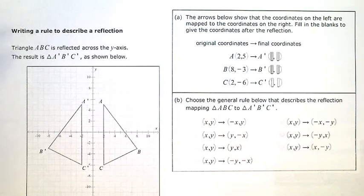Writing a rule to describe a reflection. Triangle ABC is reflected across the y-axis. The result is triangle A'B'C' as shown.